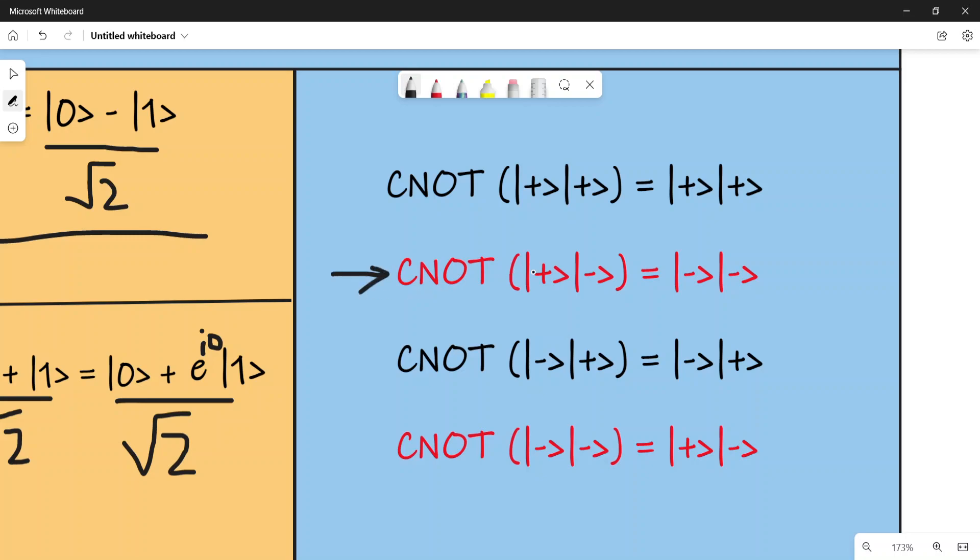Prior to the operation, this qubit was in ket minus state and this was in ket plus state. But after the CNOT operation, the first qubit is still in ket minus state, but the qubit that was in ket plus state is now in ket minus state.